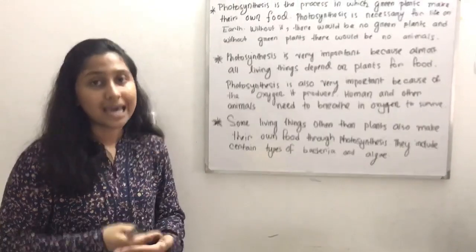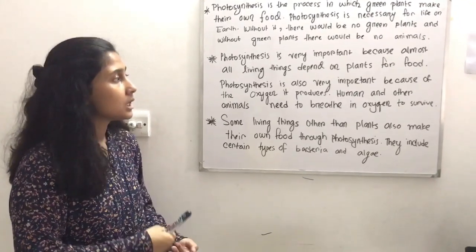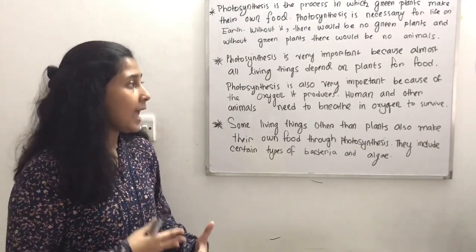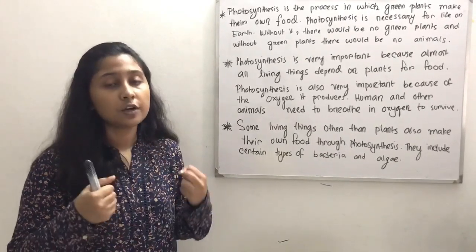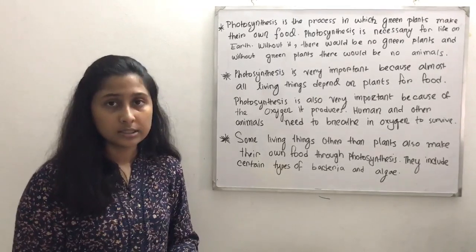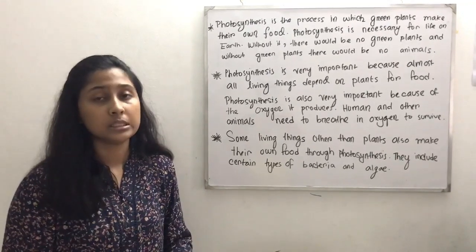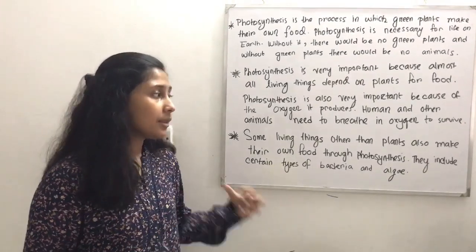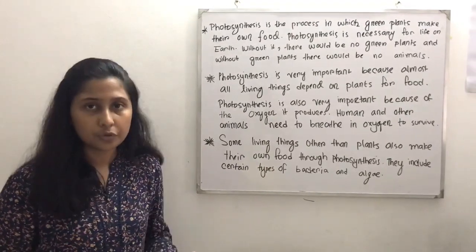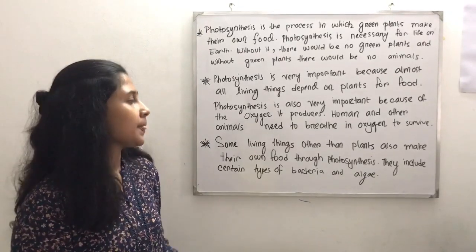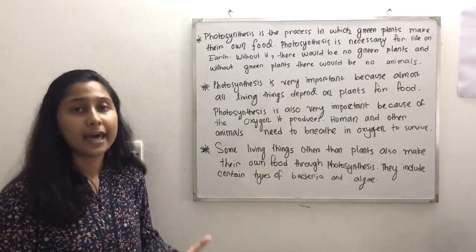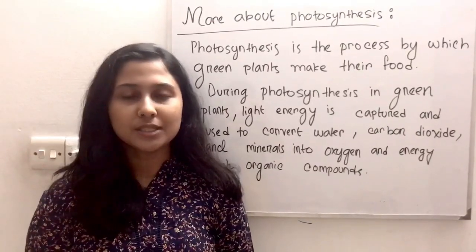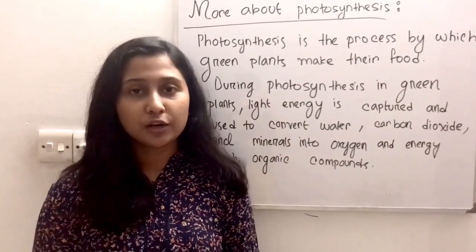Photosynthesis is also very important because of the oxygen it produces. Humans and other animals need to breathe in oxygen to survive. Some living things other than plants also make their own food through photosynthesis — these include certain types of bacteria and algae. Thank you everyone for watching this video. I hope you enjoyed it, and if you have any questions you can comment down below.